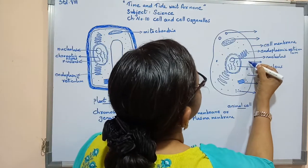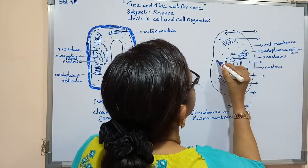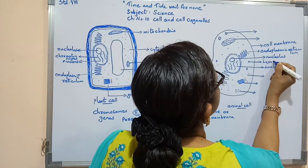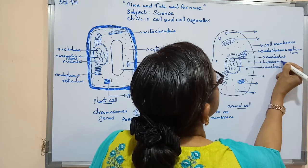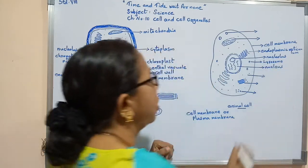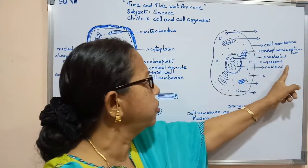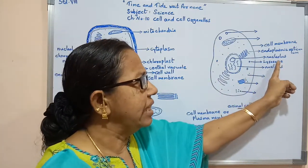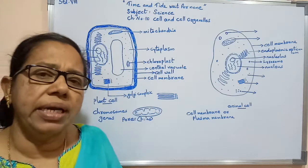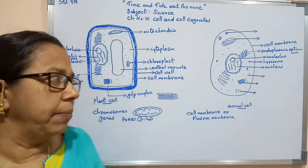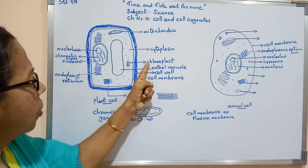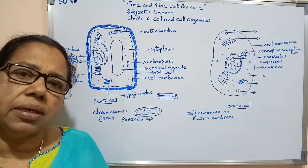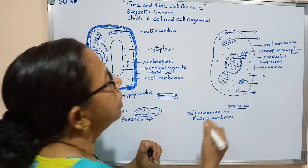Here you can see small bag-like structures known as lysosomes. Lysosomes are present only in the animal cell. Similarly, chloroplasts are present only in the plant cell, not in the animal cell.